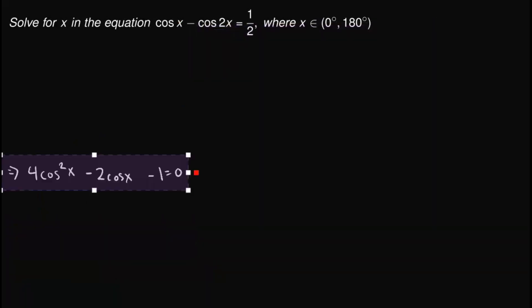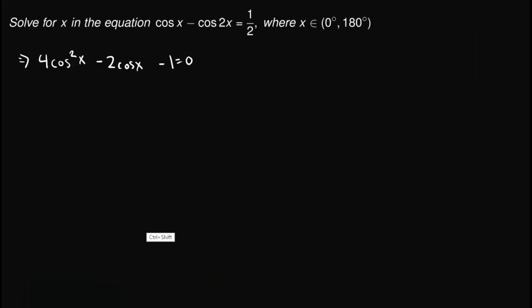Now, the next thing that we would do is, I would let y equal cosine x. And so we will have an equation of 4y squared minus 2y minus 1. And what can you observe here? As you can observe, we have actually converted this equation into a quadratic equation.